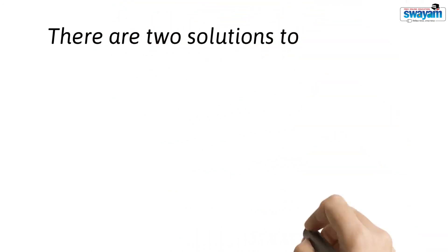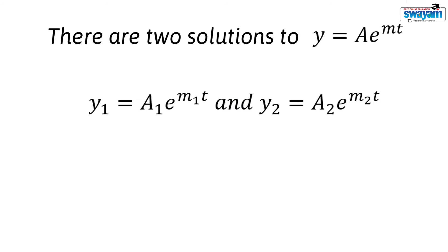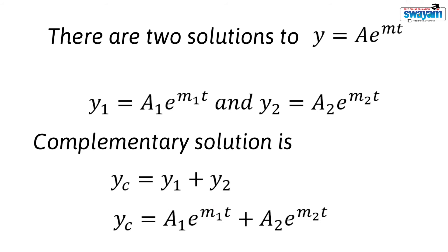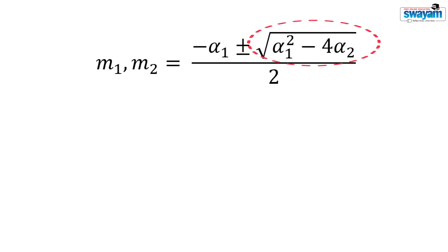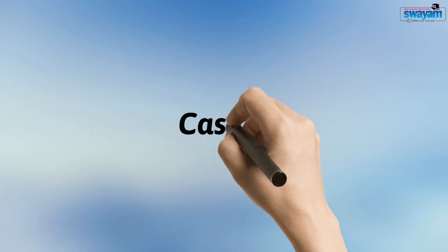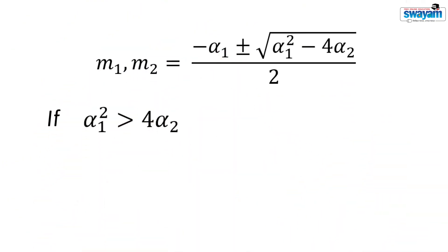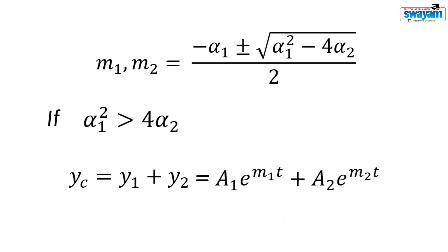Therefore, there will be two solutions of y equal to a·e to the power mt. The complementary solution is given by the sum of the two roots. We may have three cases because the roots depend on the expression under the square root. If α₁² is greater than 4·α₂, we have two real roots and the complementary solution is given by y₁ plus y₂.